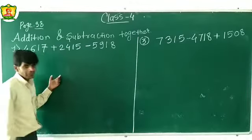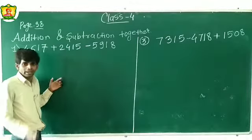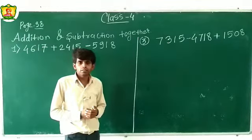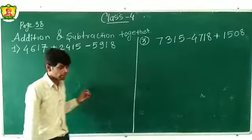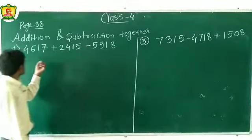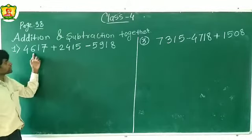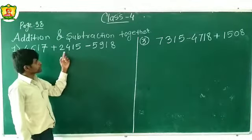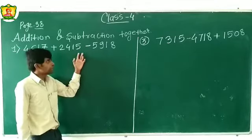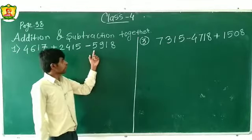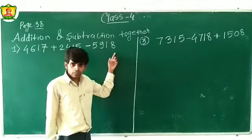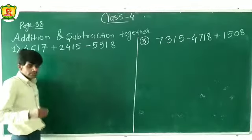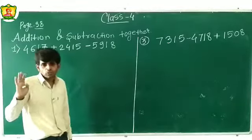Everyone open your book and your notebook, keep out your pencil. The first question is: 4617 plus 2415 minus 5918. Step by step we will solve this — first we will add these two numbers.